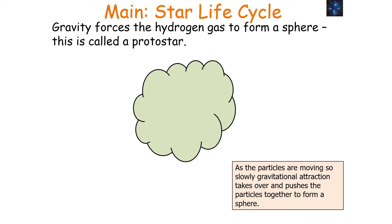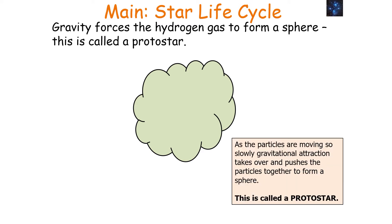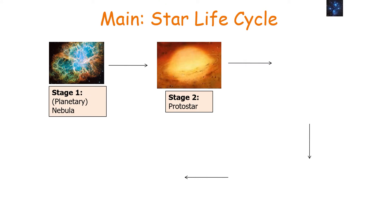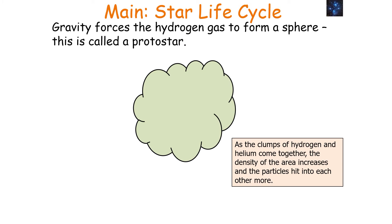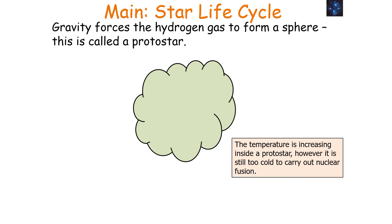Gravity forces the hydrogen gas into a sphere, and this is called a protostar. As the particles are moving so slowly, gravitational attraction takes over and pushes them together to form a sphere — we call this sphere a protostar. The second stage is the protostar. As clumps of hydrogen and helium come together, the density increases and particles collide more, causing the sphere to heat up. The temperature inside the protostar increases, however it's still too cold to carry out nuclear fusion.